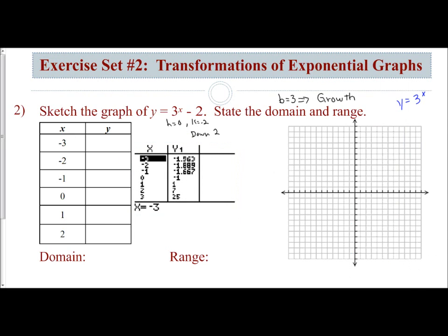I'm just going to fill in my table with those. The first one I have is negative 1.963. At negative 2, I'm at negative 1.889. I'm at negative 1.667. At 0, I'm at negative 1. At 1, I'm at 1. At 2, I'm at 7.